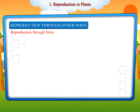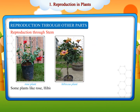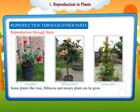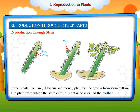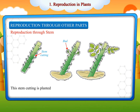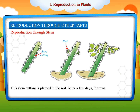Reproduction through stem: Some plants like rose, hibiscus and money plant can be grown from stem cutting. The plant from which the stem cutting is obtained is called the mother plant. This stem cutting is planted in the soil. After a few days, it grows into a new plant.